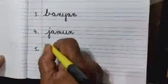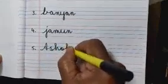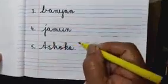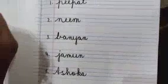And write A-S-H-O-K-A Ashoka tree. Now on the blank page children, write Paste and you can paste the pictures of trees on this page.